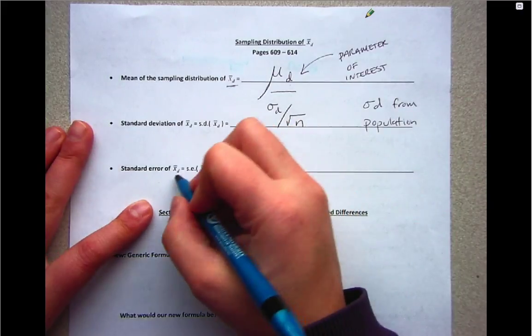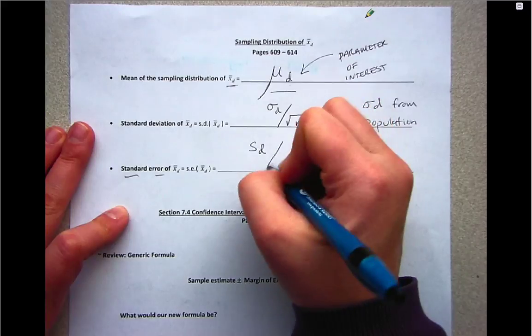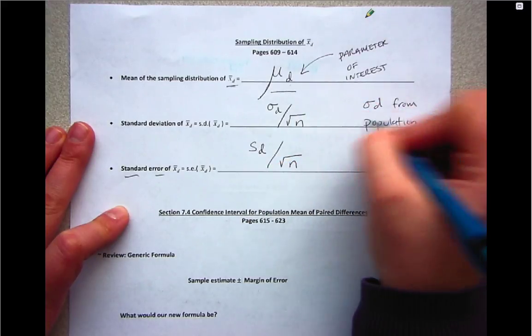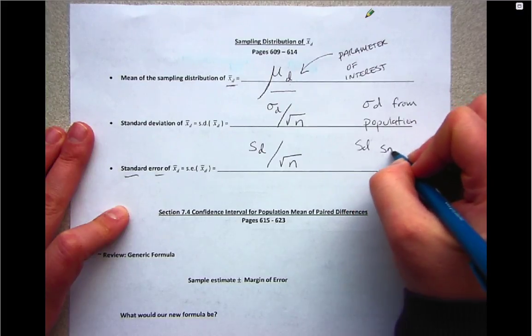So we're going to have to switch to a measurement called standard error, where we estimate the value of sigma sub d with s sub d, which is our sample standard deviation.